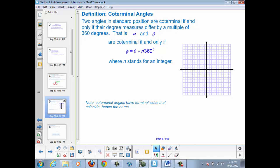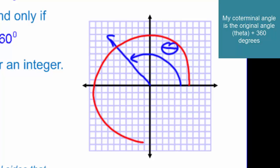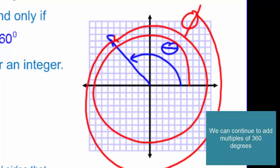What does that mean? That means if we start in that second quadrant, my initial angle theta would have a coterminal angle. That would be the original angle plus 360 degrees or plus another 360 degrees.